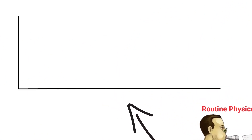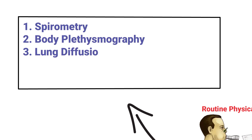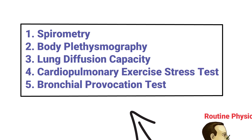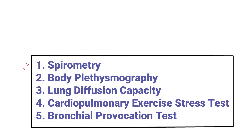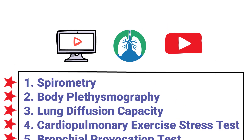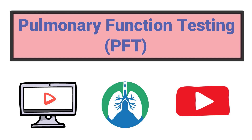In general, there are a few different types of pulmonary function tests. Some examples include spirometry, body plethysmography, lung diffusion capacity, cardiopulmonary exercise stress test, and bronchial provocation test. We've broken down each of these in greater detail in separate videos on our channel, but for this one we just wanted to provide a brief overview.